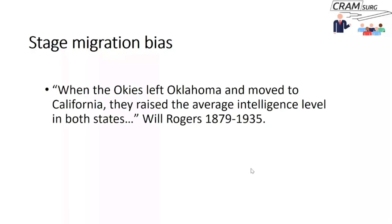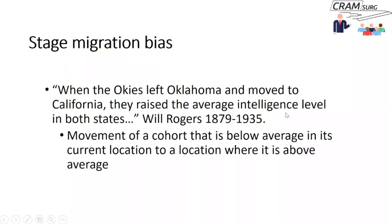Stage migration bias relates to a famous quote by Will Rogers, an American comedian from the early 20th century, who said: 'When the Okies left Oklahoma and moved to California, it raised the average intelligence level in both states.' Think about how this is possible. The only way it can happen is if you move a cohort that is below average in its current location — Oklahoma — to a location where their IQ is above average. This seemingly paradoxical statement maps directly onto clinical research.